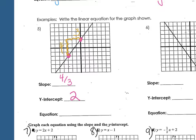So let's put it all together in an equation. 4 over 3x plus 2. It started above the origin.